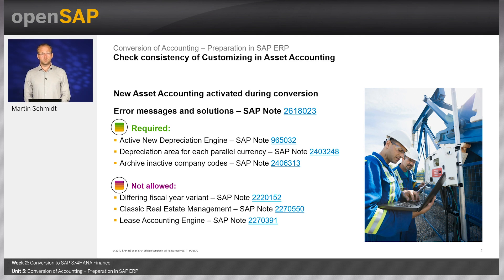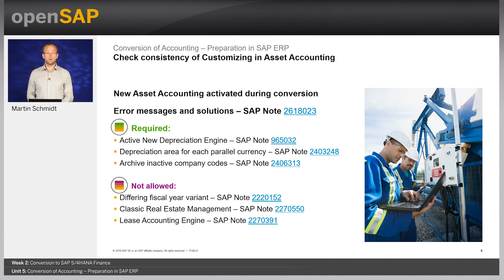One of the most important functional changes in finance coming with S4HANA is the mandatory introduction of new asset accounting — a functionality for handling parallel valuations. It has already been available for customers with new GL active since SAP ERP Enhancement Pack 7. However, in S4HANA, new asset accounting is mandatory, and if it is not yet active in your SAP system, it must be activated during the conversion process, for which certain prerequisites need to be met.